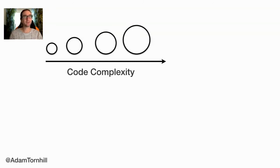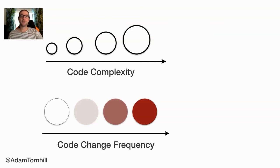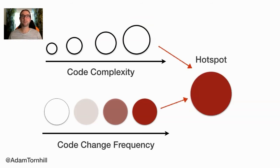Complexity is only interesting when we need to deal with it. We can look at each module and see how many changes — how much development activity — we have in each part of the code. We can calculate the number of commits per file and use color to represent that. By combining these two perspectives, we can identify complicated code that we have to work with often. Those are our hotspots.